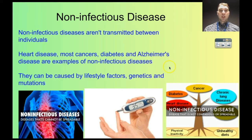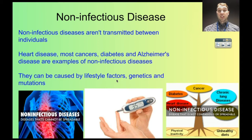You can't infect someone with diabetes, for example. The causes of non-infectious diseases can be lifestyle factors, genetics, and mutations. Let's look at diabetes — there are two types. Type 1 diabetes is caused by genetics; you inherit that. Type 2 diabetes is usually caused by lifestyle factors: by not doing exercise and not eating healthy foods, you can develop an intolerance to insulin or just not produce enough insulin.